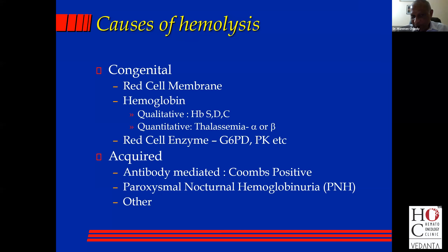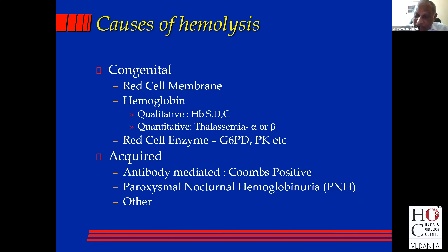Red cell membrane problem — spherocytosis. Qualitative hemoglobin problem — sickle cell disease. Quantitative hemoglobin problem — thalassemia. One thing I want to tell you: in a person with thalassemia major, there is no jaundice, because the total hemoglobin produced is reduced in thalassemia, so there cannot be jaundice in thalassemia major. It can be there in HbE thalassemia because that is a combination of a hemoglobinopathy and a thalassemia. Next is red cell enzyme deficiency — G6PD and PK — so only three congenital causes of hemolytic anemia: red cell membrane, hemoglobin, and red cell enzyme.